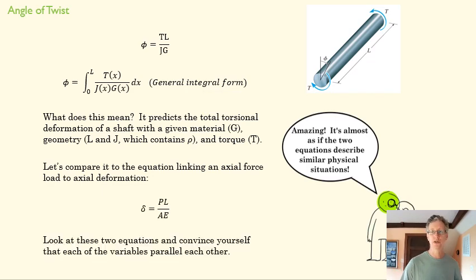If we look at those two equations, you can see that these are very similar. The length of the rod is the same. Torque here replaces the axial force. J, our polar moment of inertia, replaces the area in terms of cross-sectional properties. And G, our shear modulus of elasticity, replaces the normal modulus of elasticity.